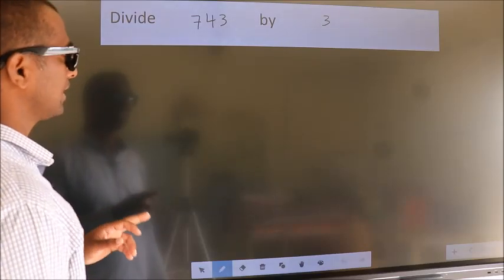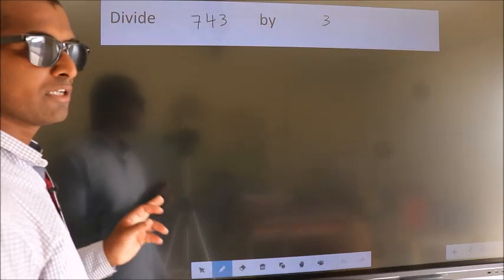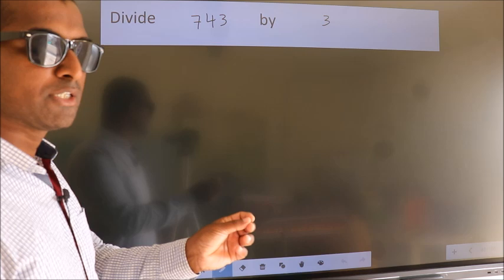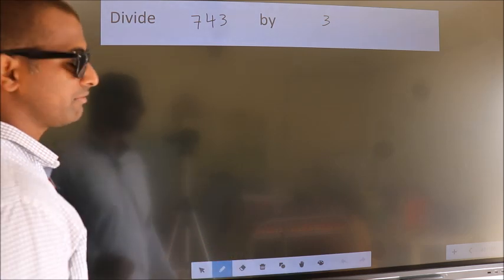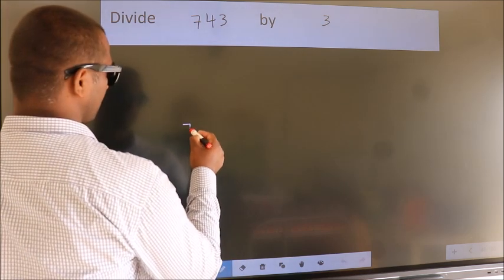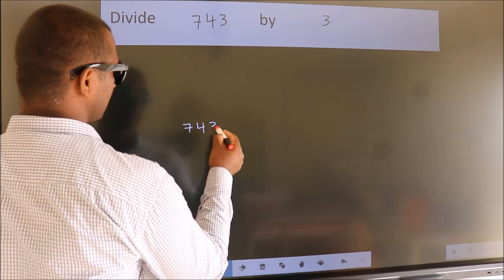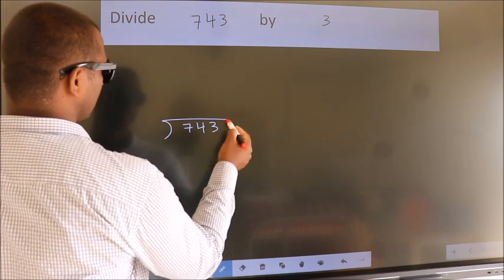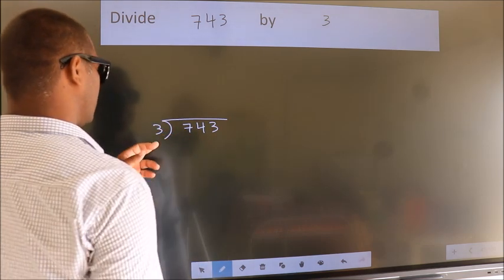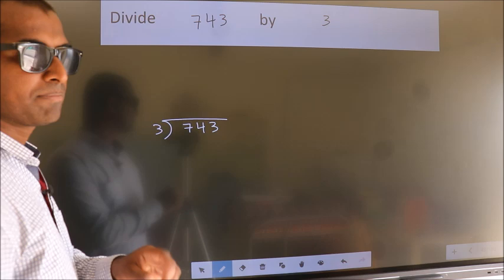Divide 743 by 3. To do this division, we should frame it in this way. 743 here, 3 here. This is your step 1.